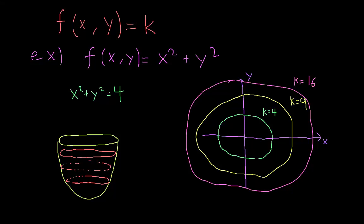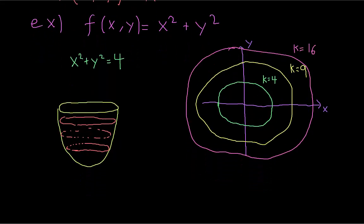The main advantage of level sets, as opposed to graphs, is that their pictures have the same dimension as the domain. In this example, the function was x squared plus y squared. The domain is two-dimensional because the input is a pair of real numbers. Our level curves were circles in the x-y plane, so they lived in two-dimensional space. Whereas a graph of this function lives in three-dimensional space.